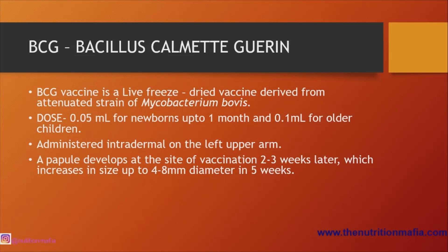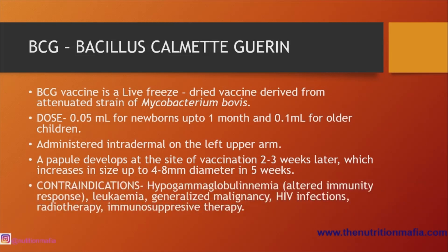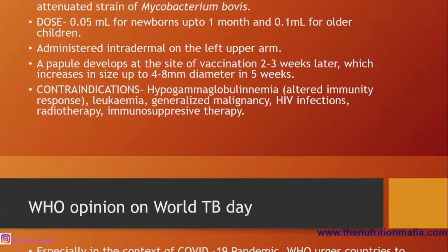Let us discuss the contraindications. There are certain conditions where you cannot administer the BCG vaccine, for example: hypogammaglobulinemia — that is, an altered immunity response — leukemia, generalized malignancy, HIV infections, radiotherapy, and immunosuppressive therapy.